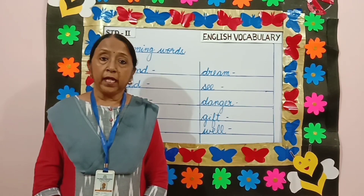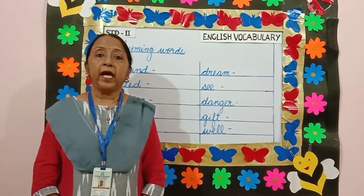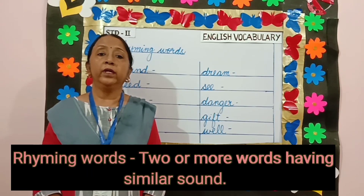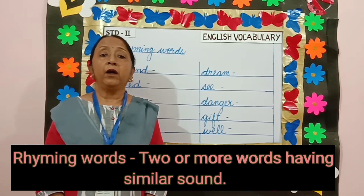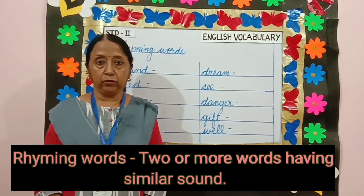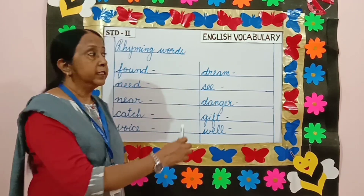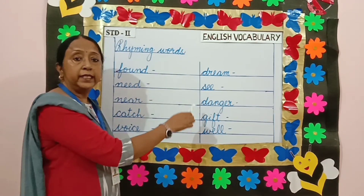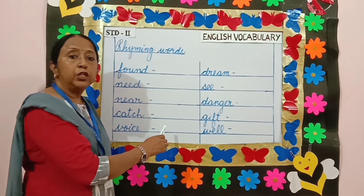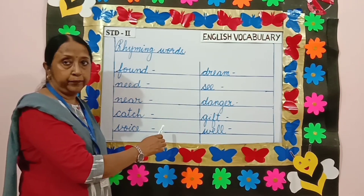What are rhyming words? Rhyming words are two or more words having a similar sound. Here are some of the words I have written from your English vocabulary list.